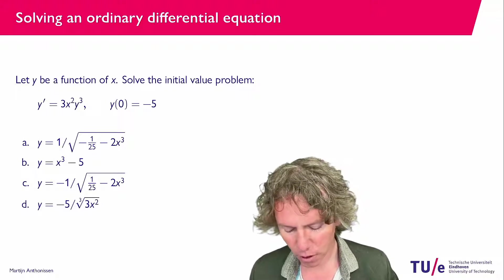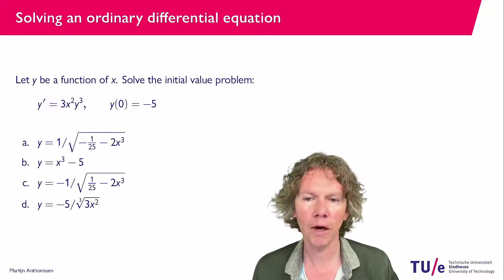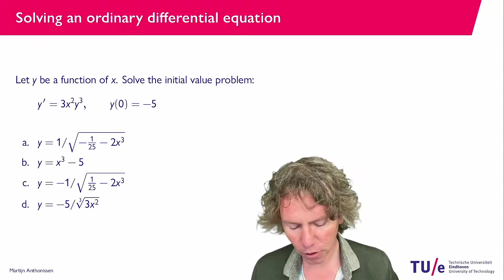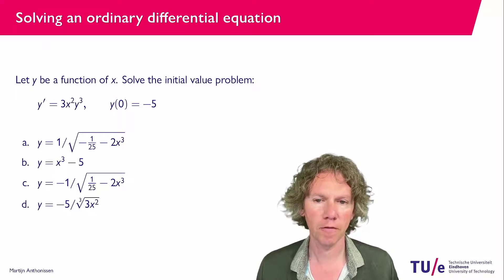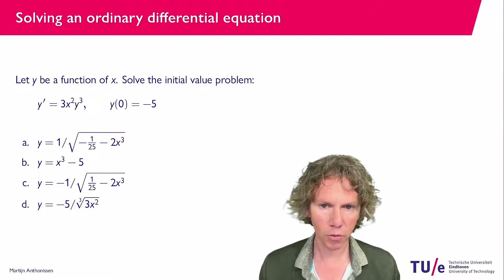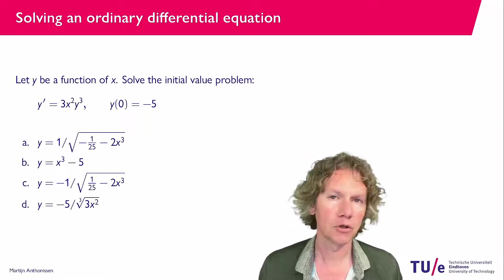So y is a function of x, we are being given that the derivative of y is 3x squared y to the power 3 and we know that if we plug in x equals 0 into y we find minus 5. We need to solve the differential equation, use this initial condition to find the solution.